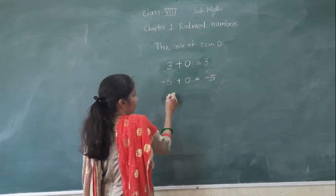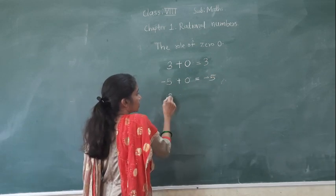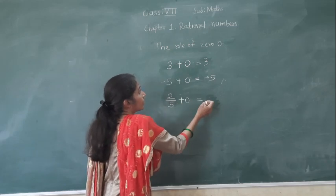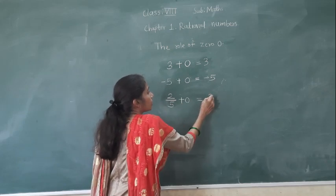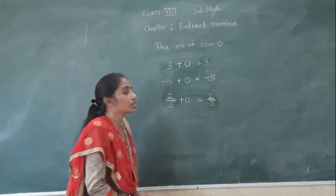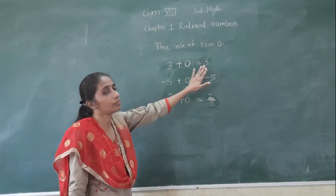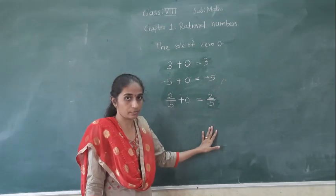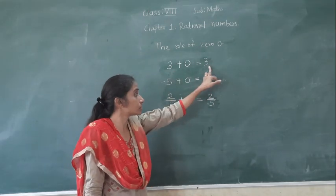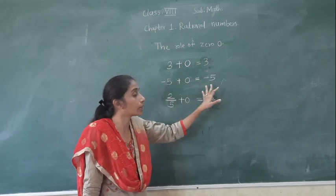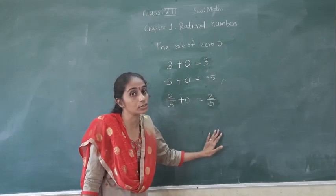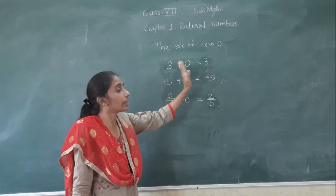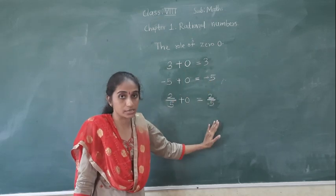Suppose if in fraction, if I will add 0, I will get the answer the number itself. Means, if we add 0 to any number, we get the answer the number itself. This we have seen for the whole number, this is for integer, and this you saw for the fraction. So, if we add 0 to any number, the answer is the number itself.